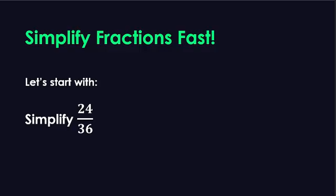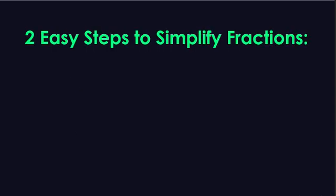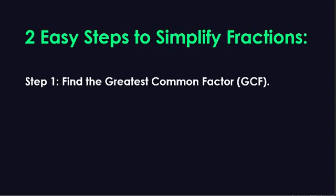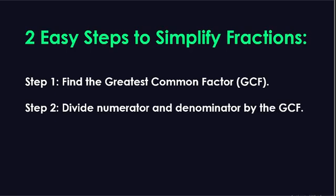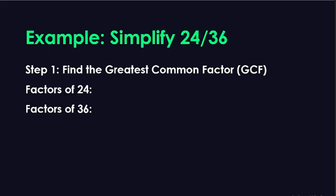Let's start with simplifying 24 over 36. There are two steps to simplify fractions. Step 1: find the greatest common factor, or what we call the GCF. Step 2: divide the numerator and denominator by the GCF. And that's it. Now let's apply it to our problem.